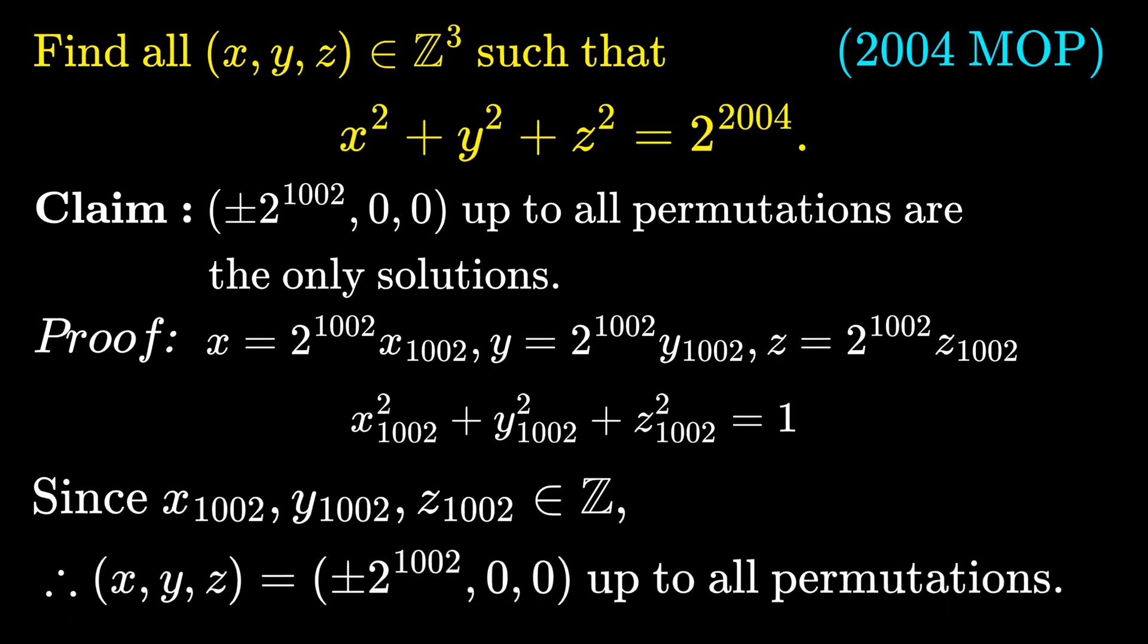Therefore, x, y, and z indeed can only be the triples plus or minus 2 power 1002, 0, 0, up to all permutations. And this proves our claim.